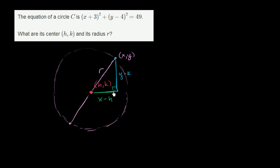And so from the Pythagorean theorem, we know that this squared plus this squared must be equal to our distance squared. And this is where the distance formula comes from. So we know that (x - h)² + (y - k)² must be equal to r².